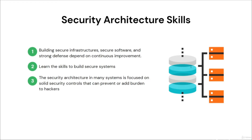Cybersecurity is not just focused on threats, vulnerabilities, and attacks. It includes building solid systems that can prevent attacks from happening. The end goal of cybersecurity should be sustainable solutions that can offer services to legitimate users at all times. Security architecture in many systems focuses on solid security controls that can prevent or add burden to hackers, reducing their effectiveness. Skills such as identity and access management, network configuration, and system hardening are crucial.